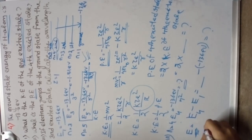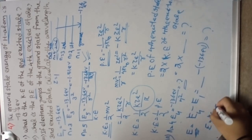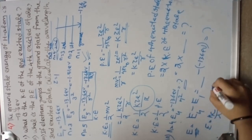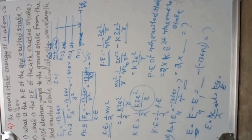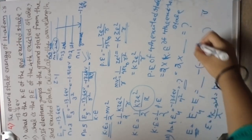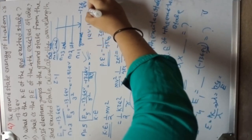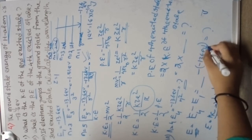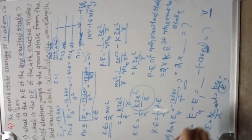We know that E = hc/λ, so λ = hc/E. Put the values of h and c, and convert the energy from electron volts to joules — one electron volt equals 1.6 × 10⁻¹⁹ joules. Then put the value into the formula to calculate the wavelength.